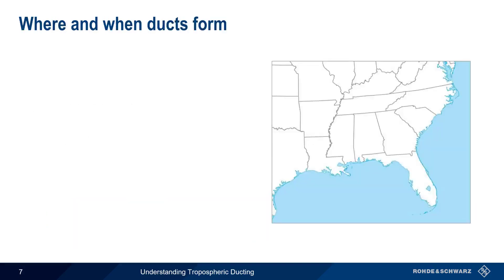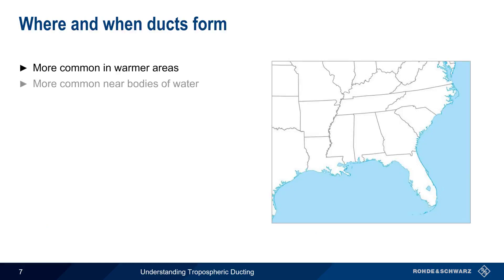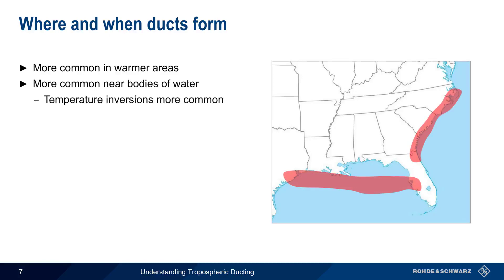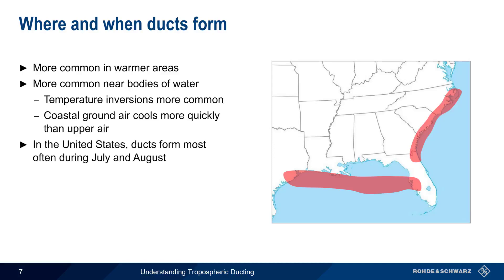Geography plays an important role in the formation of ducts. Ducts are more often found in warmer areas and near bodies of water, particularly in coastal regions. Temperature inversions are more common in these areas, in part because the ground along coasts tends to cool more quickly than the upper air. Time of year is also very important — in the United States, July and August have the highest number of ducts, but ducting can also take place year-round.